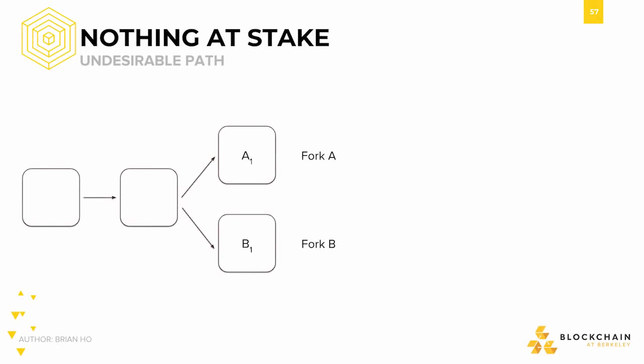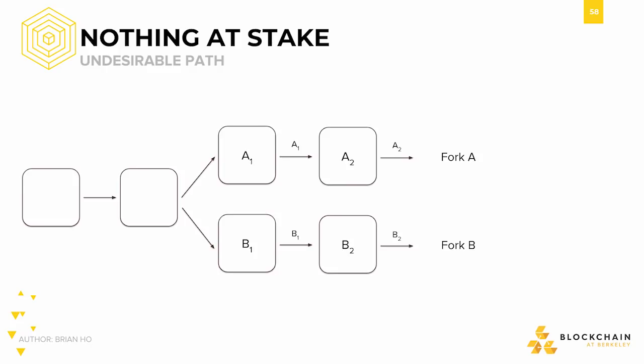Let's start looking at the most basic problem in proof-of-stake: the nothing-at-stake attack. This problem stems from the fact that all voting uses virtual resources rather than physical ones like proof-of-work. Keep in mind the goal of the blockchain: to come to consensus on a single correct chain. Anything that prevents this from happening should be discouraged. If the blockchain ends up in a situation where consensus is not desirable for individual actors, there is an issue — these two forks might continue on forever, and no one will come to consensus.